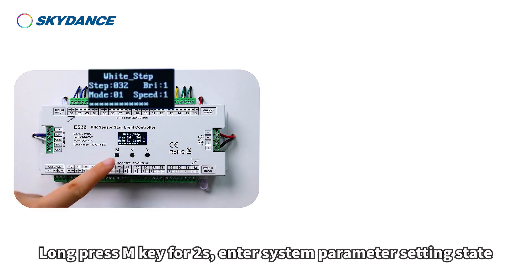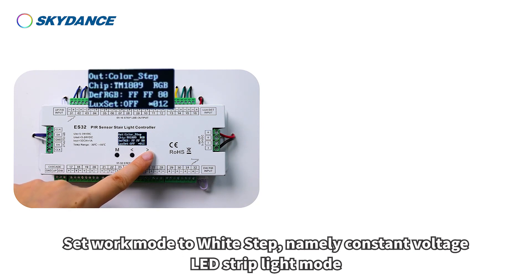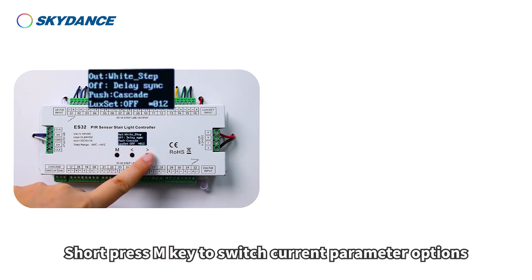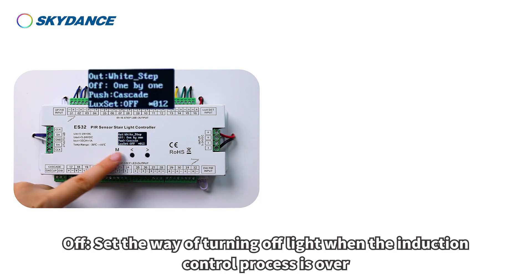Long press the M key for two seconds to enter the system parameter setting state. Set the work mode to White Step, namely Constant Voltage LED Strip Light Mode. Short press the M key to switch current parameter options. Off: set the way of turning off the light when the induction control process is over.